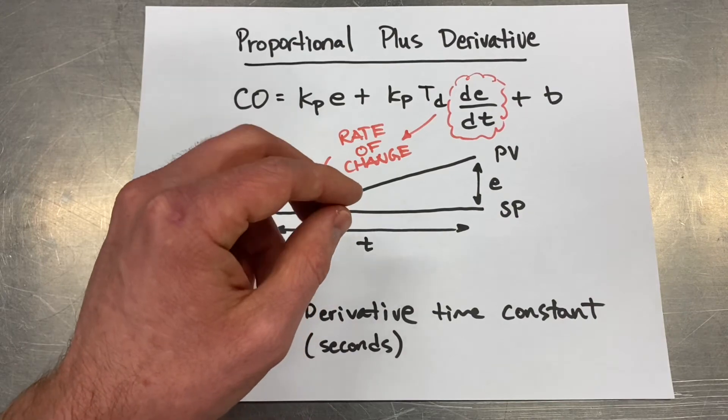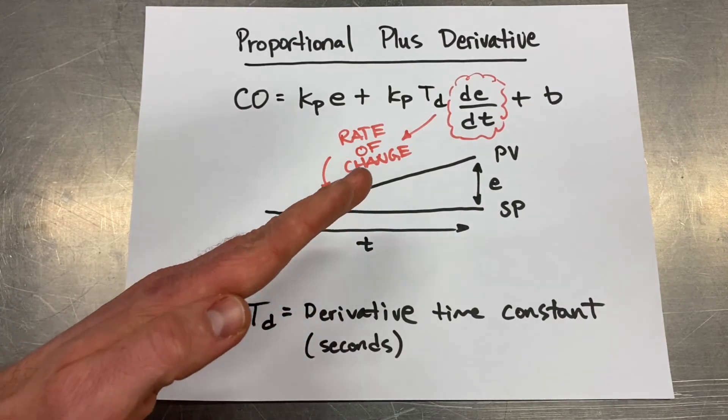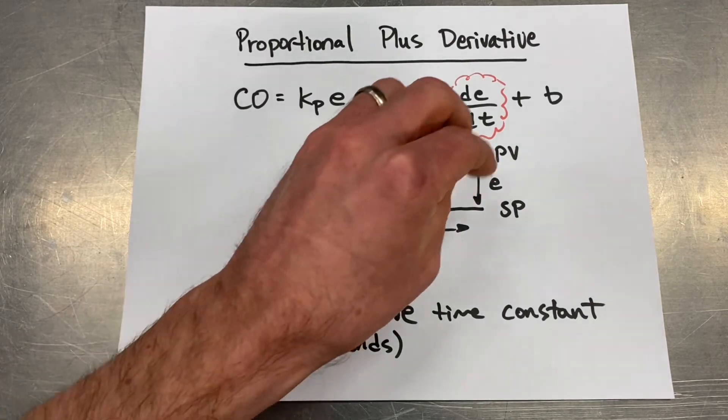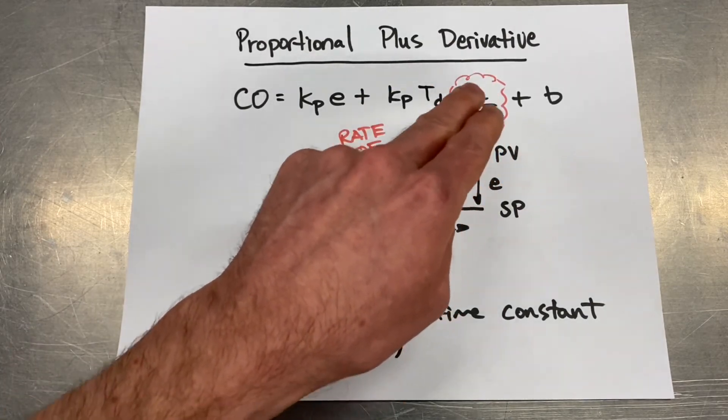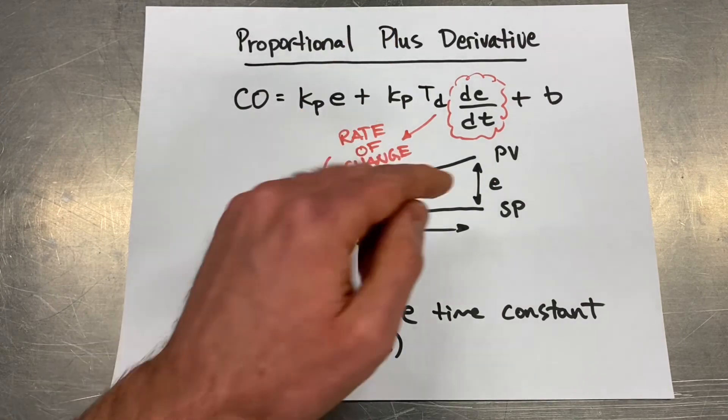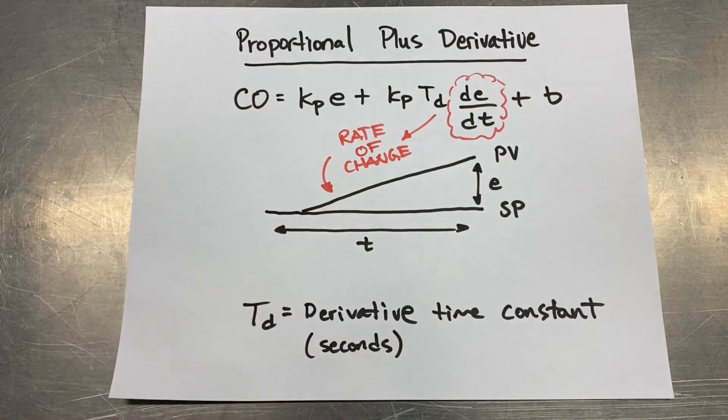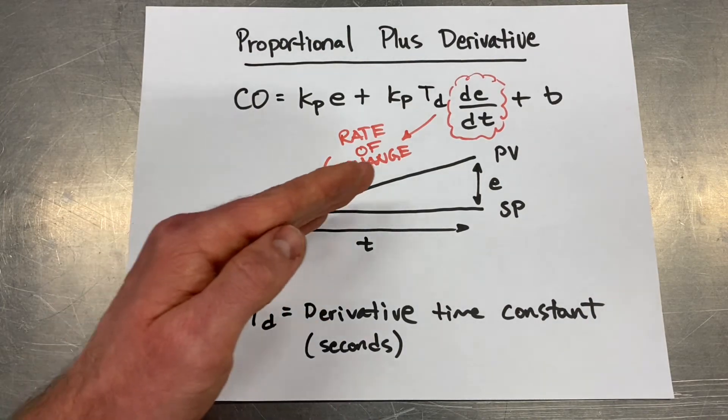So what derivative is going to do is it's going to speed up our controller. So if the error is changing slower, it's not going to respond as much because this is going to be a lower value. If the rate of change is high, this is going to be a higher value and it's going to really increase our controller output. So it's going to change the speed of response of our controller based on the rate of change of that error.